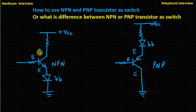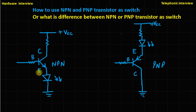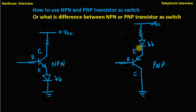The collector point of the NPN transistor is connected to positive supply, but the collector point of the PNP transistor is connected to ground. The emitter point of the NPN transistor is connected to ground, and the emitter point of the PNP transistor is connected to positive supply. So you can see the difference between emitter and collector connections when used as a switch.